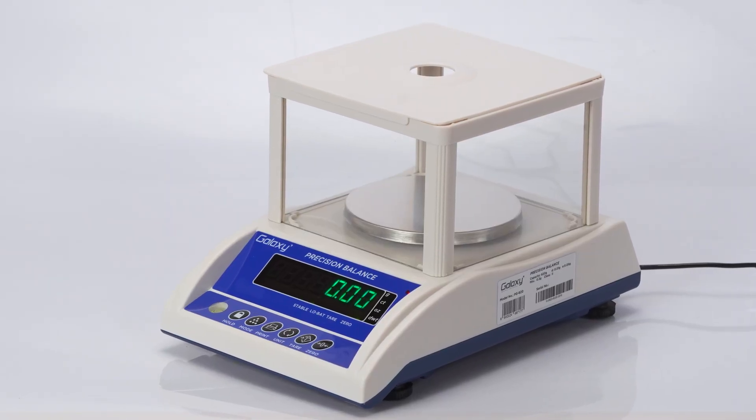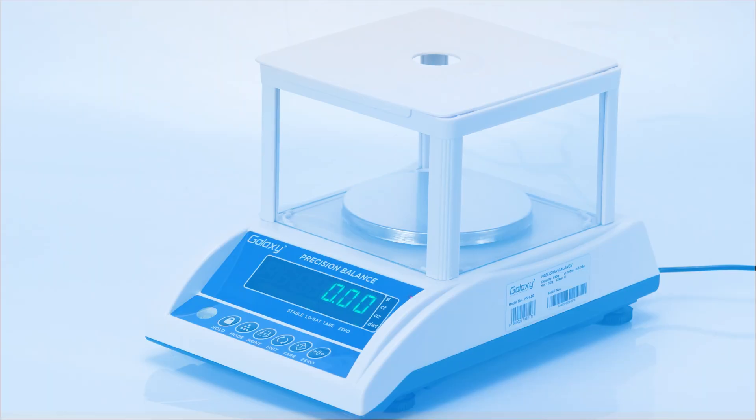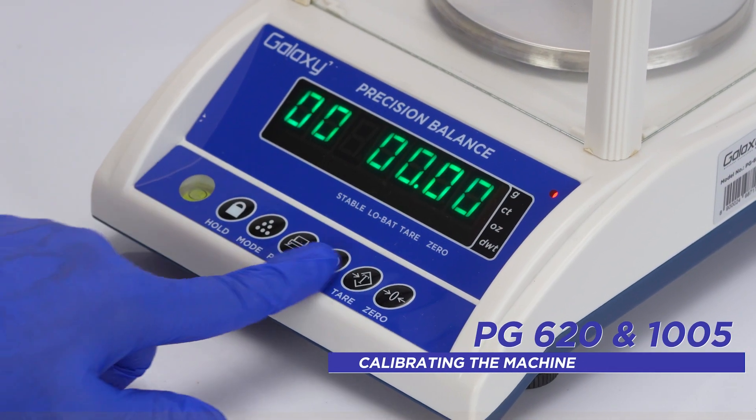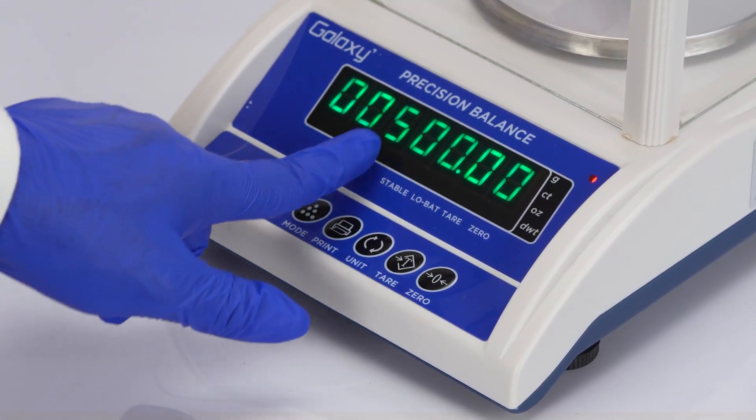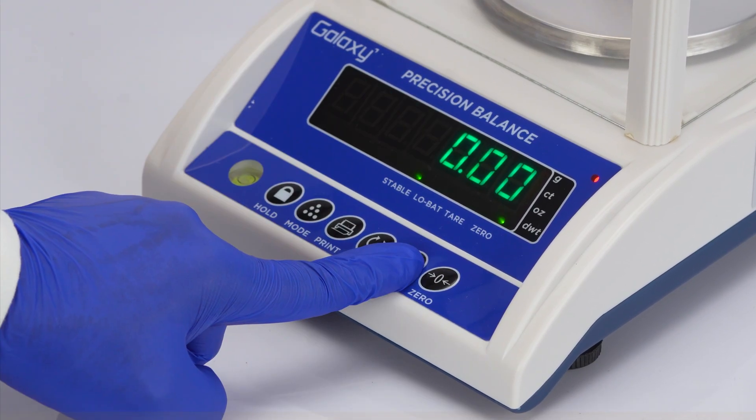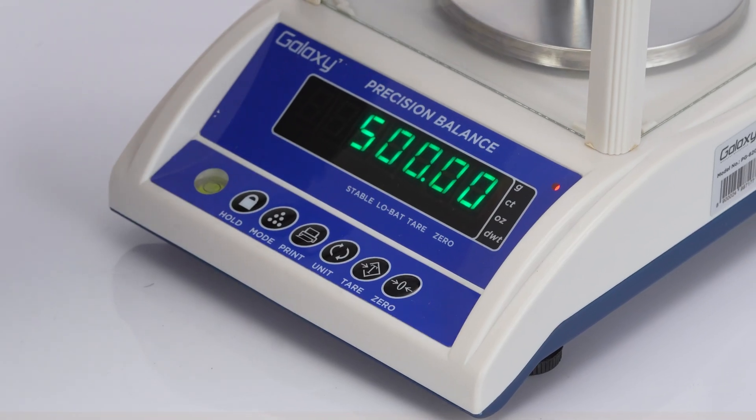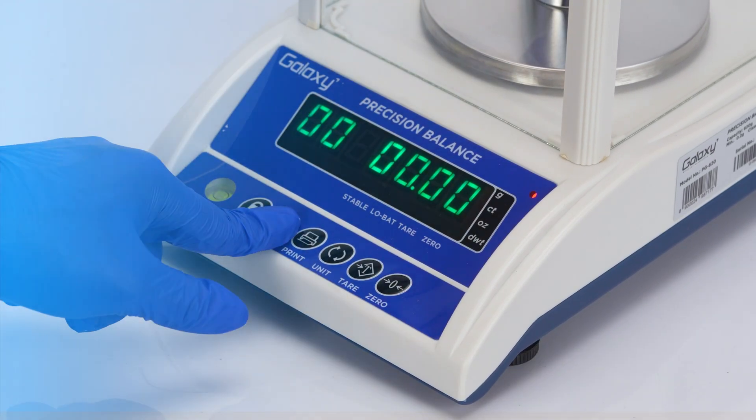Always calibrate the balance after setup or relocation to ensure accuracy. For calibration, press and hold tare in weighing mode until Cal appears. Adjust the displayed weight using tare, place the standard weight shown on the screen, wait for the stable symbol and press mode to complete the calibration.